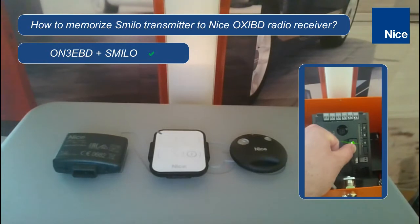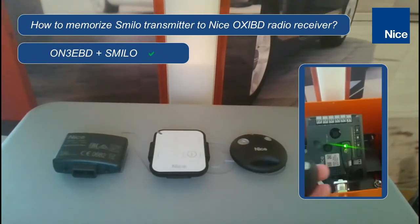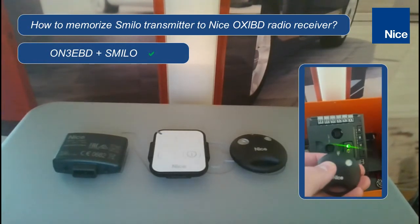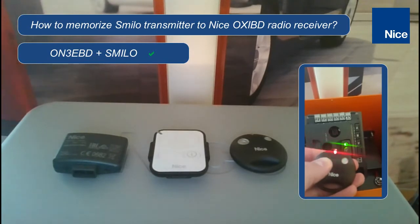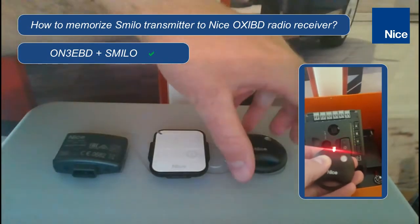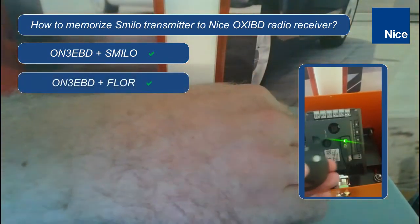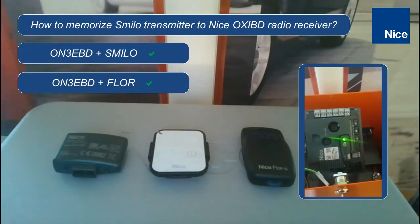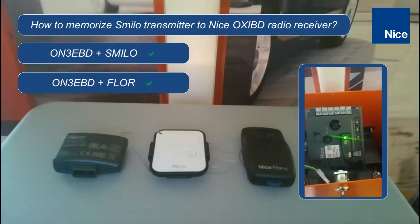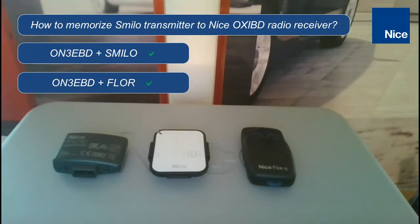But we have to remember that if we memorize one SMILO transmitter to the memory, we have to use bidirectional transmitters only with SMILO unidirectional transmitters. If we memorize first one FLOR transmitter to the memory, we have to use bidirectional transmitters only with FLOR unidirectional transmitters.